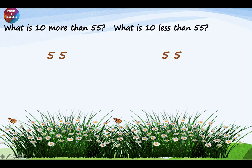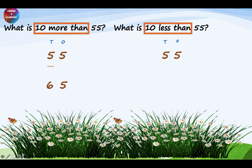Now let's look at another example. What is 10 more than 55? First, write the place values — 1's and 10's. The sum says 10 more than, so you are going to add to the 10's place. The 10's place is 5, and when you add to it, it becomes 6. The 1's place remains unchanged — it's going to be 5. The answer is 65. What is 10 less than 55? Write the 1's and 10's. The sum says 10 less than, meaning subtract from the 10's place. 5 becomes 4, and the 1's place remains unchanged. The answer is 45.